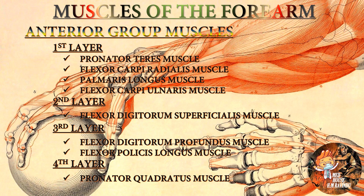Now we are going to talk about the muscles of the forearm. Forearm muscles are subdivided into anterior group, lateral group, and posterior group. The anterior group is organized in four layers. First layer: pronator teres, flexor carpi radialis, palmaris longus, and flexor carpi ulnaris. Second layer: flexor digitorum superficialis. Third layer: flexor digitorum profundus and flexor pollicis longus. Fourth layer: pronator quadratus.